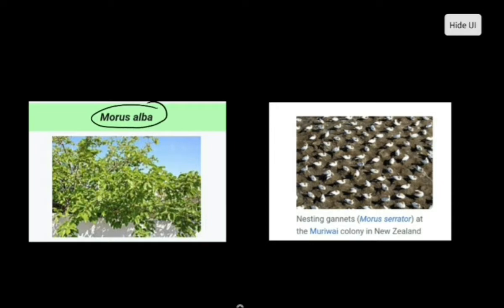For that reason we have several plant species having similar names with that of animal species. For example, Morus alba is a mulberry plant. Morus is also a group of birds called the gannet bird which also have the generic name as Morus. So we are not concerned with that. It does not matter to us as a botanist about other organisms.